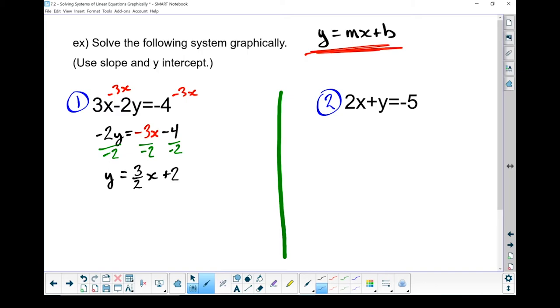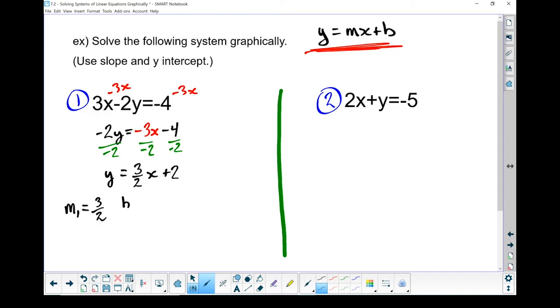So for this equation, for line 1, slope of line 1 equals 3 halves. That's a rise of 3 and a run of 2. My y-intercept of that line happens to be plus 2. Let's go put that on the graph.